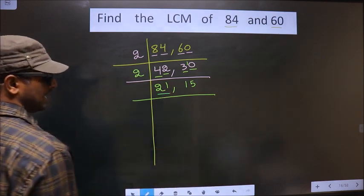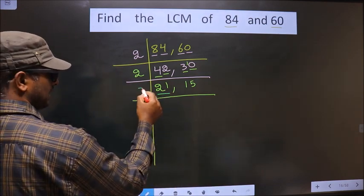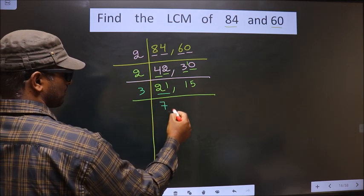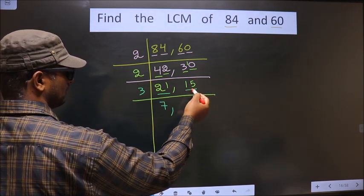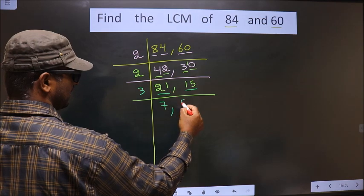Now, here we have 21. 21 is nothing but 3 sevens. And here we have 15. When do we get 15 in the 3 table? 3 fives are 15.